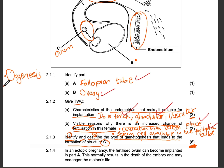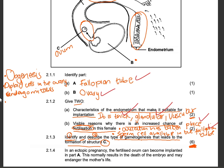This is a copy and paste from the exam guidelines. Diploid cells in the ovary undergo mitosis to form numerous follicles.